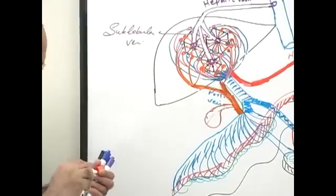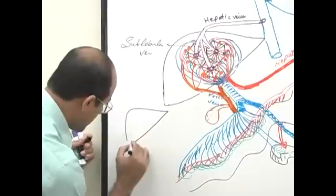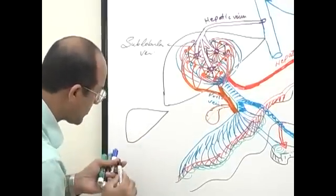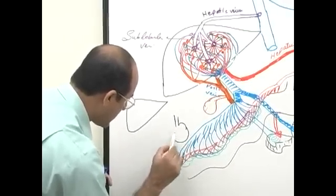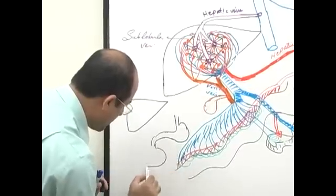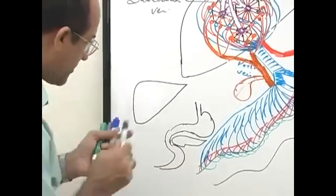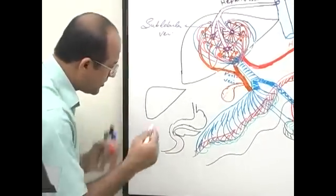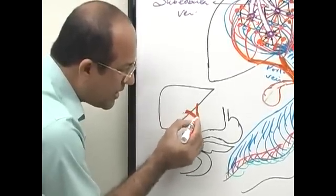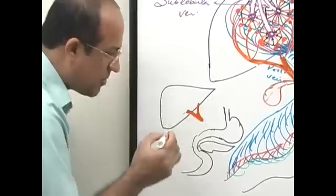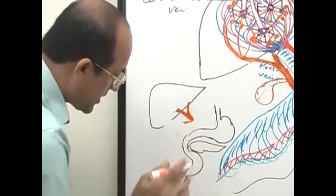The common bile duct is drawn here for clarity. This diagram has important anatomical implications. The right hepatic duct, left hepatic duct form the common hepatic duct, and the structure nearby is the pancreas.